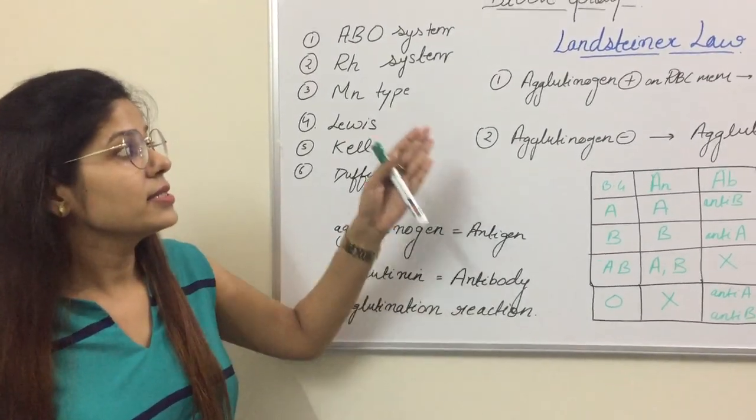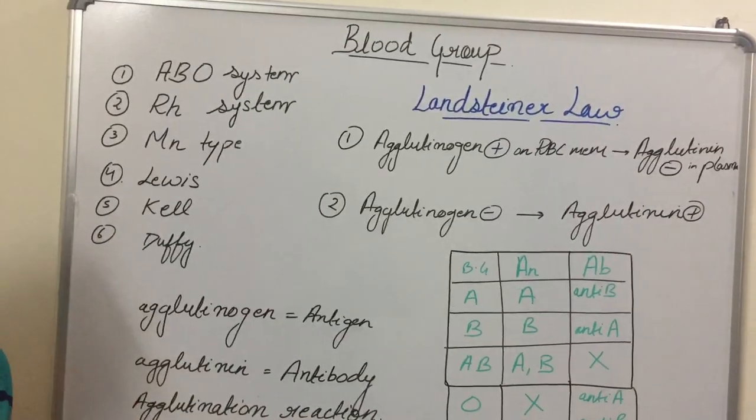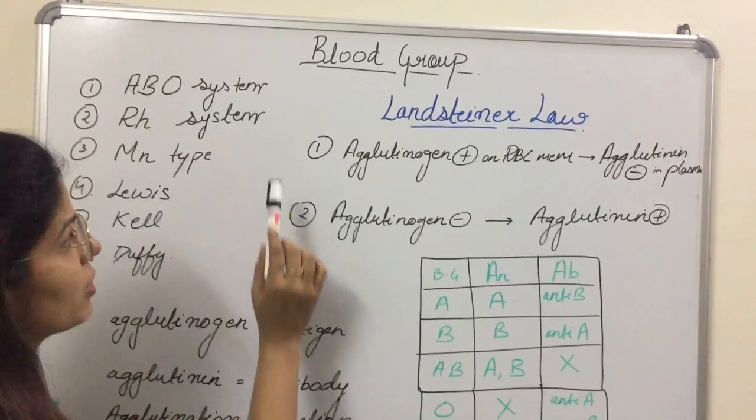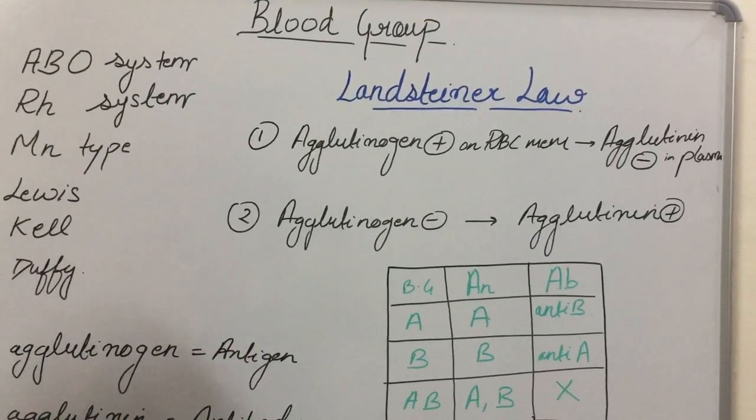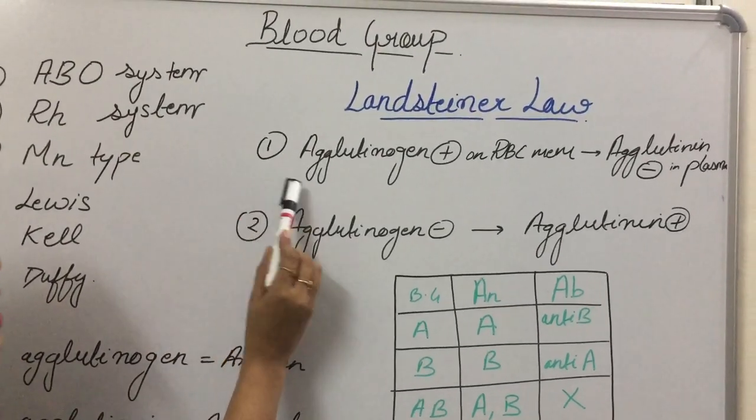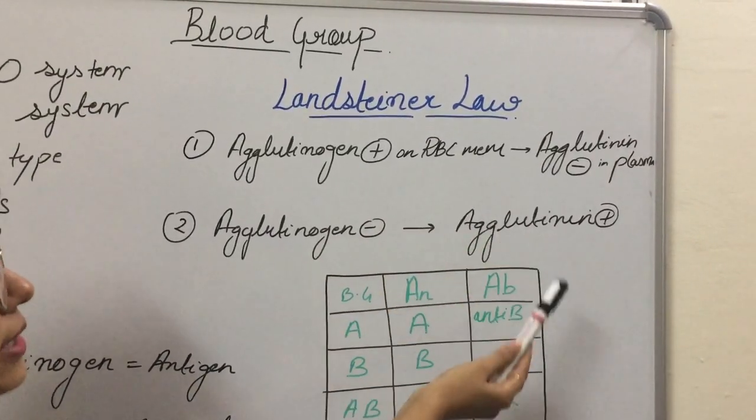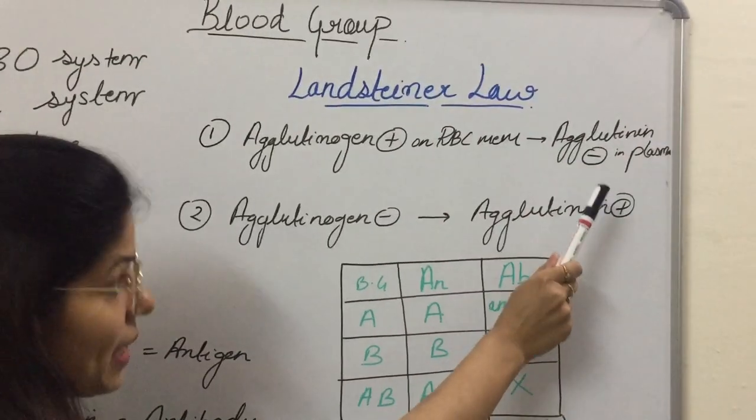The next is Landsteiner's law. He is a scientist who discovered the blood group system. In Landsteiner's law, there are two components: the first component and the second component. What does the first component state? The first component states that if the agglutinogen is present on the RBC membrane, then the corresponding agglutinin, that is antibody, is absent in the plasma.